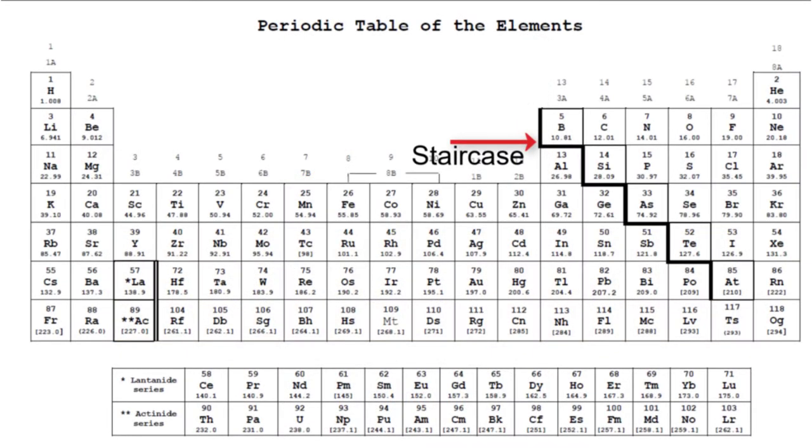The periodic table is an excellent resource for us to identify what elements are cations and anions.